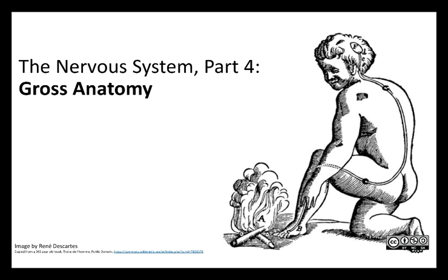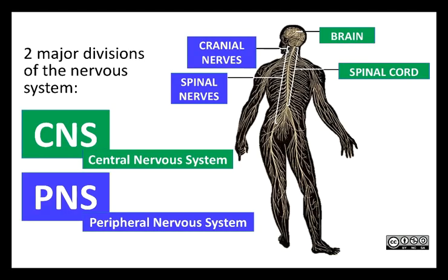Welcome to lecture four on the nervous system. In this video I'm going to introduce you to the gross anatomy of the central nervous system, particularly the brain. In video five we'll look in more detail at the structure of the brain, and then in video six we'll look at the spinal cord and the peripheral nervous system. Remember there are two major divisions: the central nervous system, which includes the brain and spinal cord, and the peripheral nervous system, which includes cranial and spinal nerves as well as the sensory receptors.